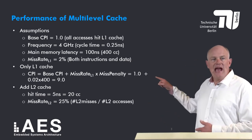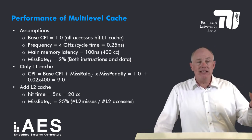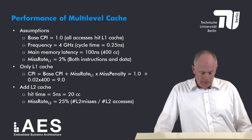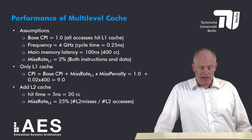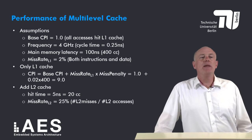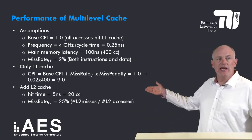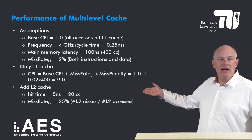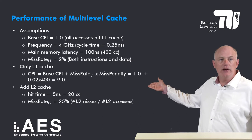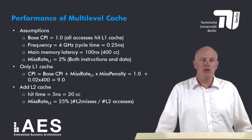If we only have an L1 cache, the CPI is given by the base CPI plus the miss rate of L1 times the miss penalty of L1, which is the main memory latency. Substituting the numbers: 1.0 plus 2% times 400 gives a CPI of 9.0.